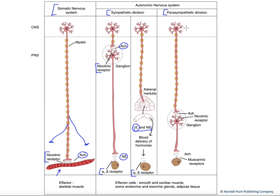Finally, the parasympathetic division. Its preganglionic motor neurons leave the central nervous system and synapse within ganglia that are much closer to the target tissue, generally essentially embedded within the target tissue. The ganglion releases acetylcholine onto nicotinic receptors, causing activation of our postganglionic — much shorter now — postganglionic cell to release, in this case, acetylcholine onto muscarinic receptors. So muscarinic cholinergic receptors mediate our parasympathetic effects, as opposed to norepinephrine and epinephrine mediating our sympathetic effects.